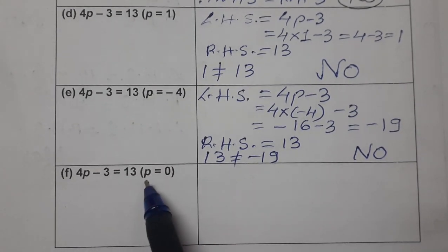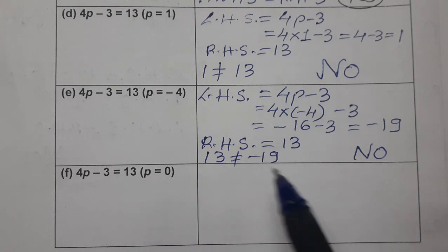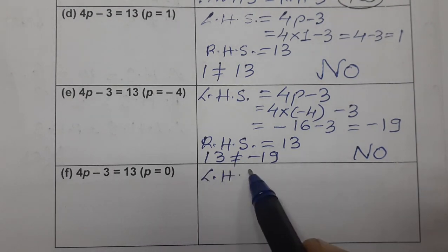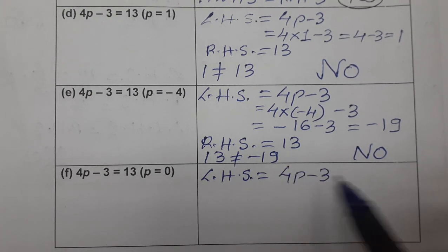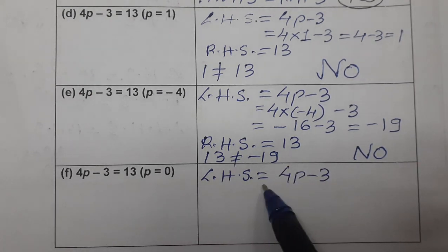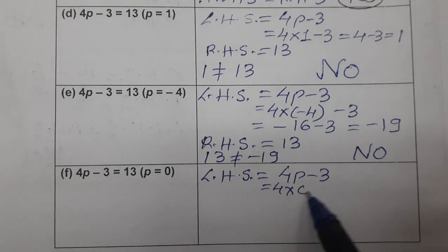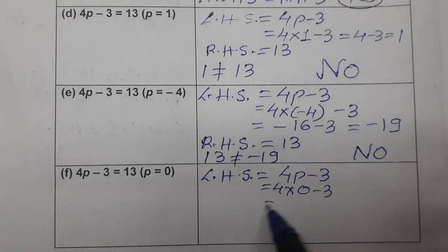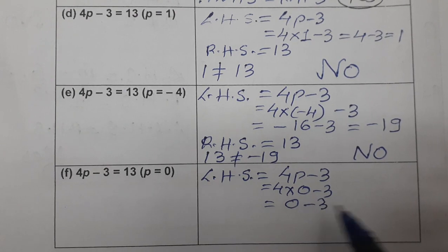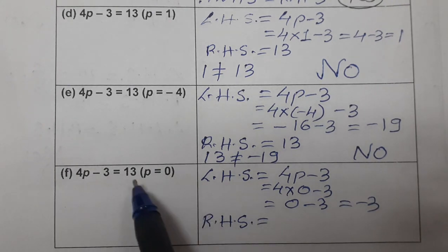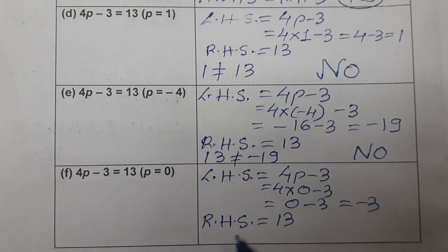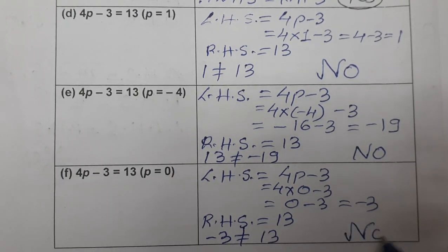The last part is (f): 4p − 3 = 13, with p = 0. Left hand side: 4 × 0 − 3 = 0 − 3 = −3. The RHS is 13. Since −3 is not equal to 13, the answer is again no — it is not the solution of the equation.